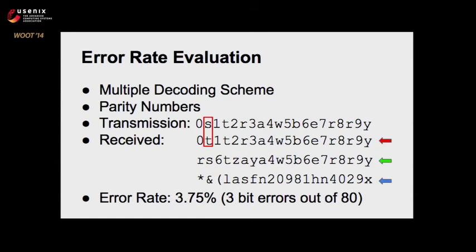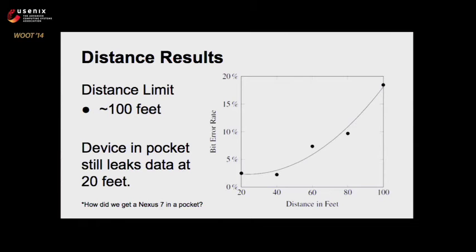Using these evaluation methods, we tested several different distances, and you can see a nice quadratic curve — exactly what we expect when working with sound. At around 100 feet, we had error rates around 20%. We started having a lot of trouble getting everything to work continuously at this distance, so we decided it was a good point to stop. We also tested a device inside of denim jeans. At 20 feet, there was no significant increase in error rate because the device was inside fabric. So we determined it's very practical — you can leak data through your pocket.